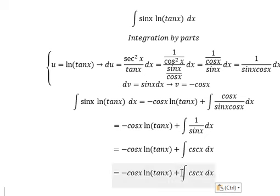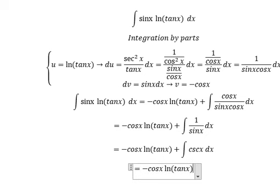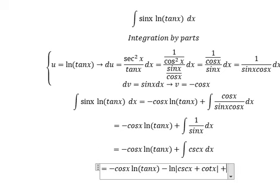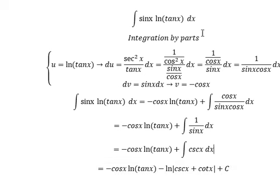The integration of this one we have negative ln of the absolute value of cosecant x plus cotangent x, and I will put the constant C. This is the end, thank you for watching.